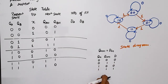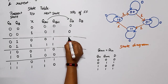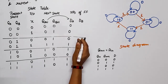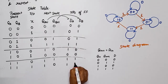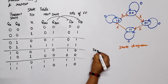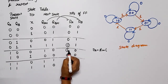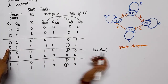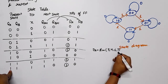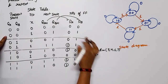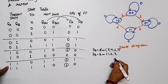Filling in DA values from the next state QA+1 column: 0, 0, 0, 1, 1, 0, 1, 1. For DB values from QB+1 column: 0, 1, 1, 1, 0, 0, 1, 0. Now deriving the equations using sum of minterms. For DA, the minterms where DA=1 are at combinations: 011 (3), 100 (4), 110 (6), 111 (7) — so DA = Σm(3,4,6,7). For DB, the minterms where DB=1 are at: 001 (1), 010 (2), 011 (3), 110 (6) — so DB = Σm(1,2,3,6).